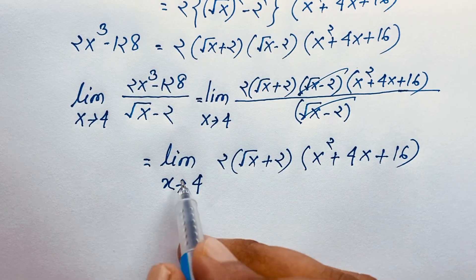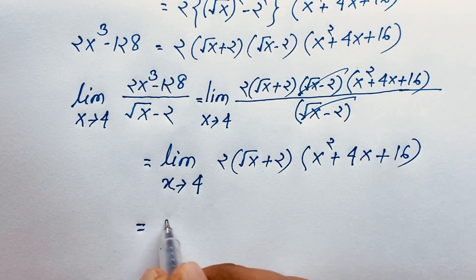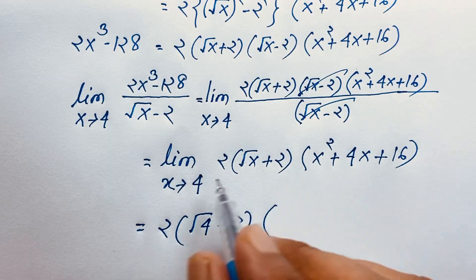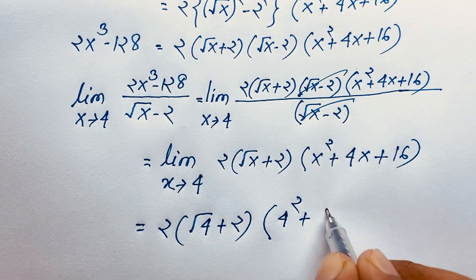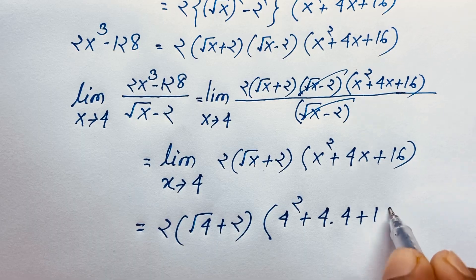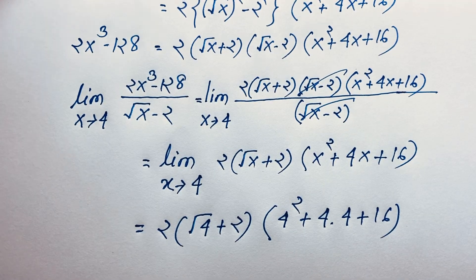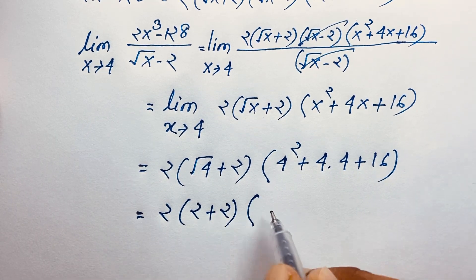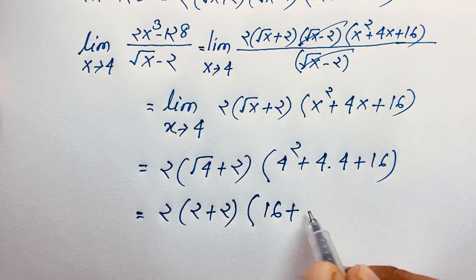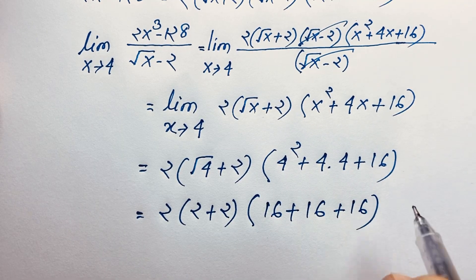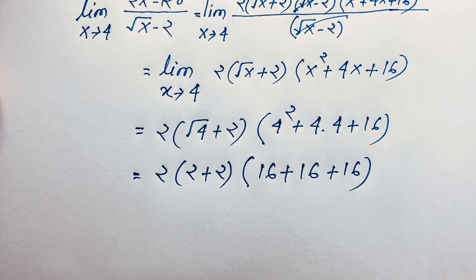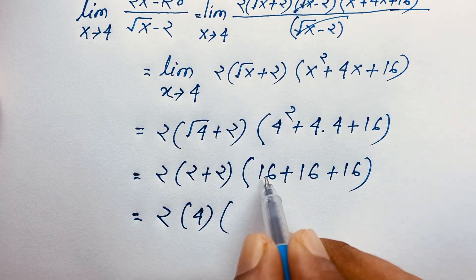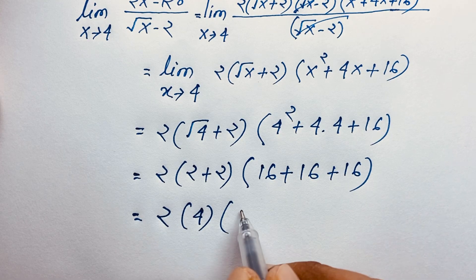Now I substitute x = 4. So it becomes 2 times (√4 + 2) times (4² + 4×4 + 16). That is 2 times (2 + 2) times (16 + 16 + 16), which is 2 times 4 times 48. That equals 8 times 48. Computing: 8 times 8 is 64, carry 6; 4 times 8 is 32, plus 6 gives 38 — so the result is 384.